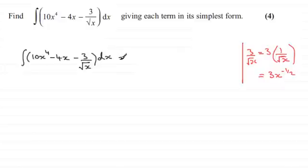So when we're integrating this then, we've got the integral of 10x to the power 4 minus 4x minus, and now I'm going to write it as 3x to the power minus a half. And we're integrating all of that with respect to x.